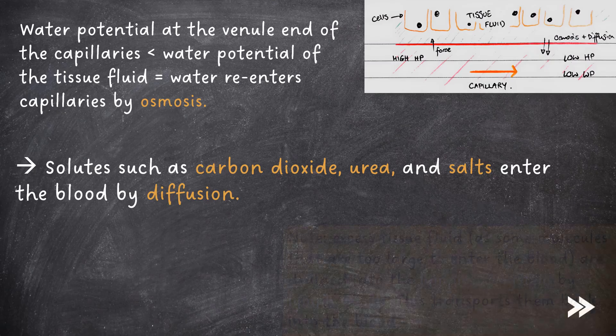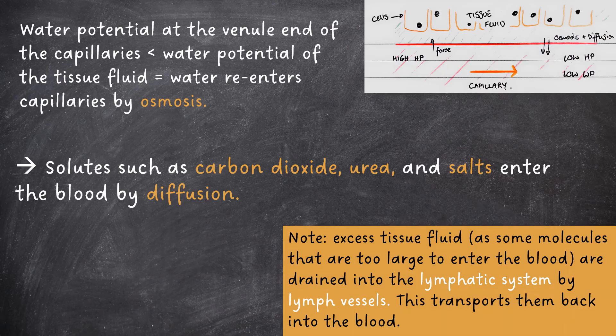Excess tissue fluid, as well as some molecules that are too large to enter the blood, are drained into the lymphatic system by lymph vessels, which transports them back into the blood.